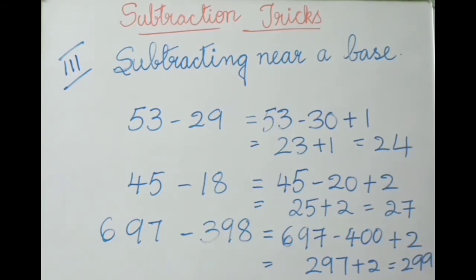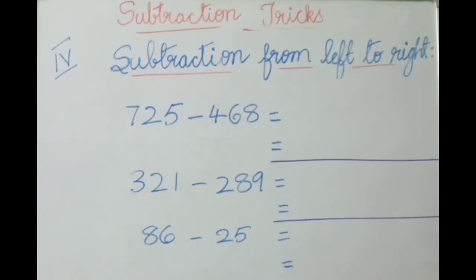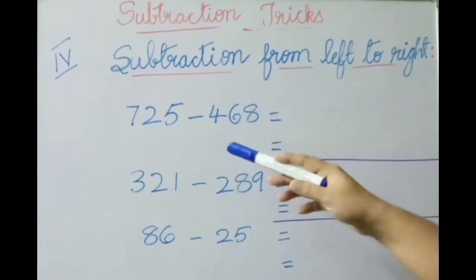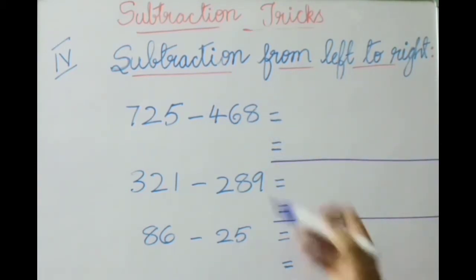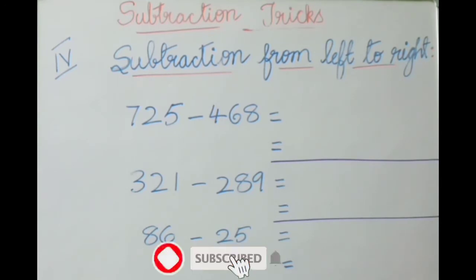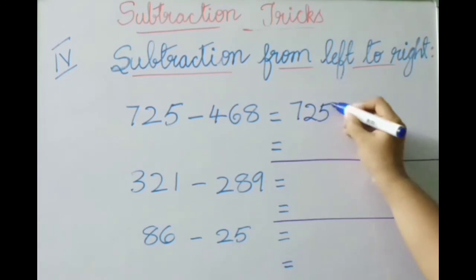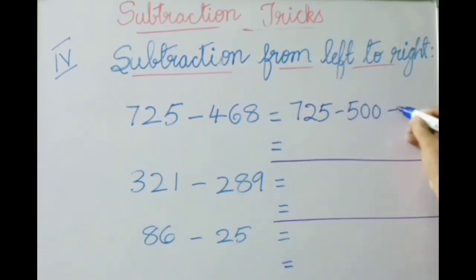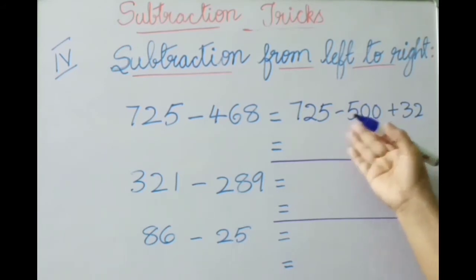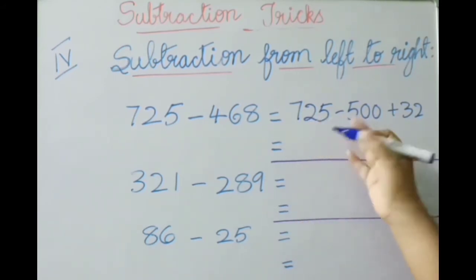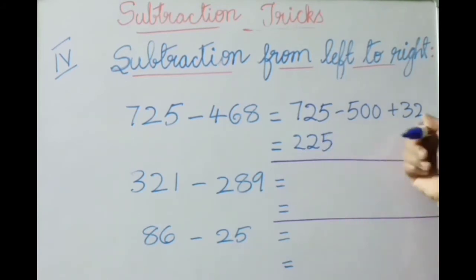Let us see the fourth method: subtraction from left to right. Generally we subtract from right to left, but for quick subtraction we do it from left to right. First example: seven hundred twenty-five minus four hundred sixty-eight. Four hundred sixty-eight can be written as minus five hundred plus thirty-two. So: seven hundred twenty-five minus five hundred plus thirty-two — first subtract five hundred from seven hundred twenty-five to get two hundred twenty-five, then add thirty-two. The answer is two hundred fifty-seven.